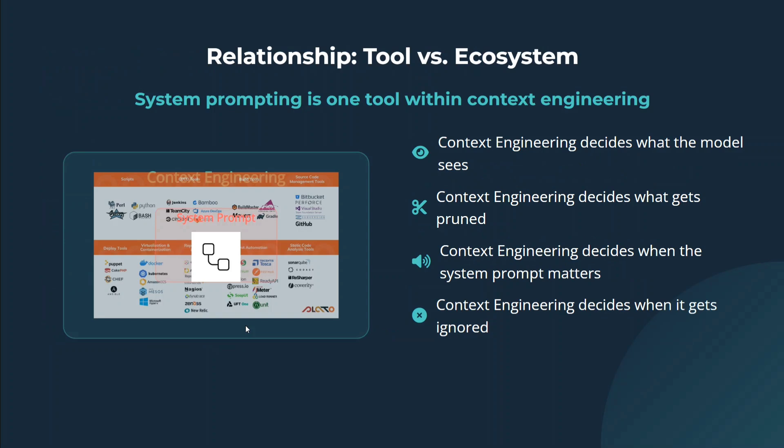Relationship — tools versus ecosystem. Context engineering decides what the model sees, what gets pruned, and when the system prompt matters. So it is the one making the system prompt important. Without context engineering, the system prompt may completely fail. Context engineering also decides when it gets ignored — it is just one of the tools within context engineering.